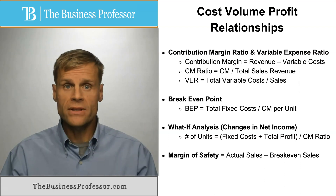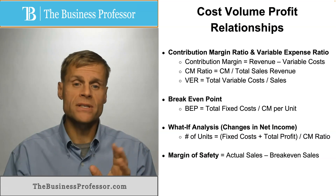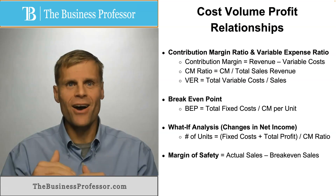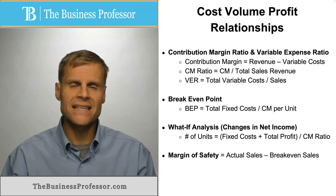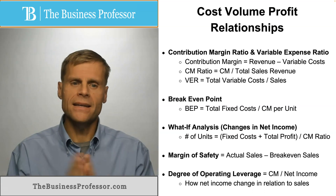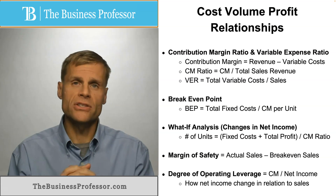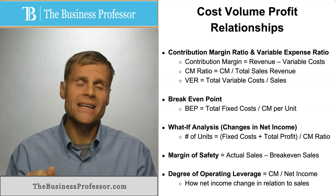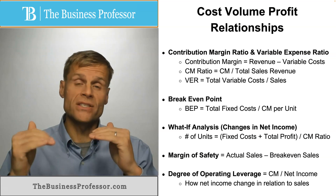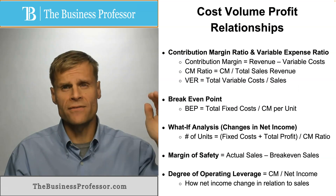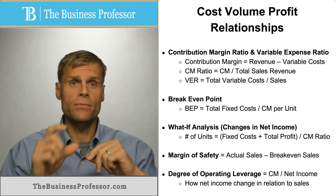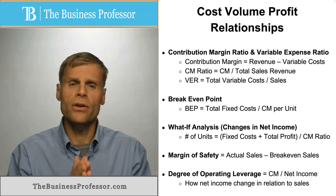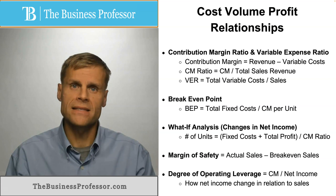Another relevant metric is your margin of safety — that's your actual sales minus your breakeven sales. As the name implies, it's your safety margin: how far above or how much you exceeded that minimum breakeven point. Lastly, degree of operating leverage is your contribution margin divided by your net income, which tells you how net income changes in relation to changes in sales, given that fixed costs stay the same while variable costs escalate with sales volume.